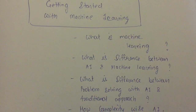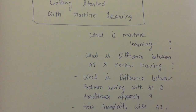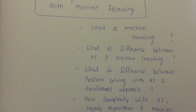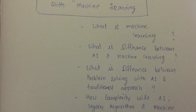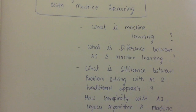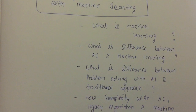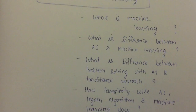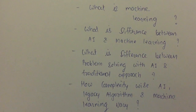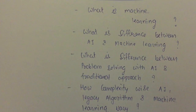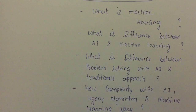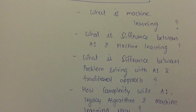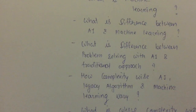So before getting started with machine learning, I want you to find answers for some questions. First, what is machine learning? Before machine learning, AI was used to solve problems — for example, playing chess with a computer. So what is the difference between artificial intelligence and machine learning? My third question is: what is the difference between problem solving with AI and the traditional approach? Before AI, traditional approaches like greedy algorithms and divide-and-conquer algorithms were used. What is the fundamental difference between these two approaches?